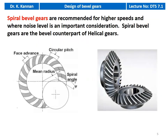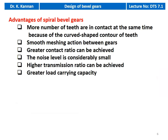Spiral bevel gears are recommended for higher speeds and where noise level is an important consideration. They are the bevel gear counterpart of the helical gear — the helical gear is cut on the cylindrical surface, whereas the spiral bevel gear is cut on the conical surface. Advantages include: more teeth in contact simultaneously, smooth meshing action, greater contact ratio, considerably lower noise level, higher transmission ratio, and greater load carrying capacity.